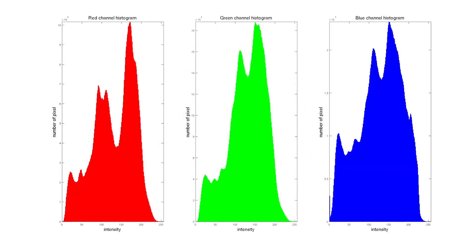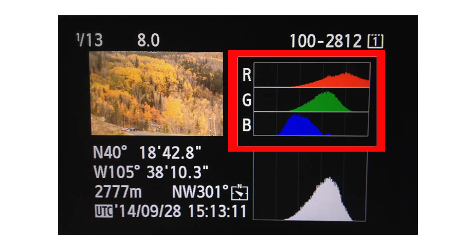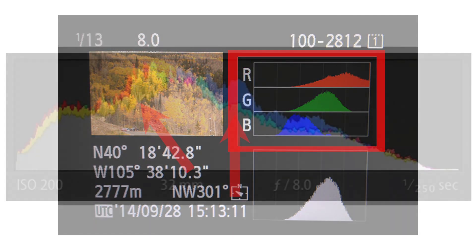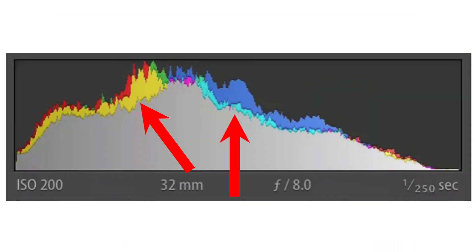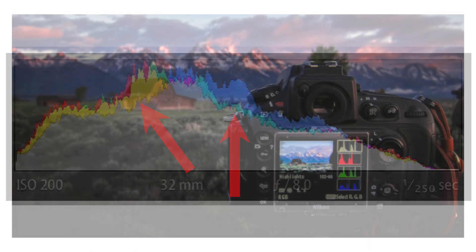Histograms usually display information for three primary colors — red, green, and blue — and are known as RGB histograms, such as what you see in this image. Yellow, cyan, and magenta appear where two of those color channels overlap.